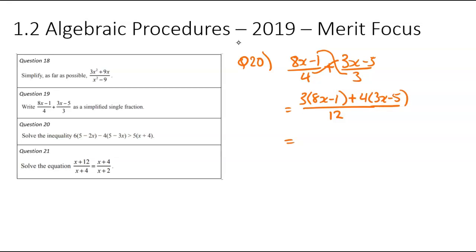So it doesn't look too bad at this stage. The bottom looks pretty simple. I'm just going to expand and simplify the numerator. So 24x minus 3 when I expand that first bracket. And then 12x minus 20 when I expand that bracket. And that there is over 12. I now group those terms together. So that's going to be 36x minus 23. And that there is going to be over 12. No common factors here because of that annoying 23, which means that there would be my simplest single fraction.